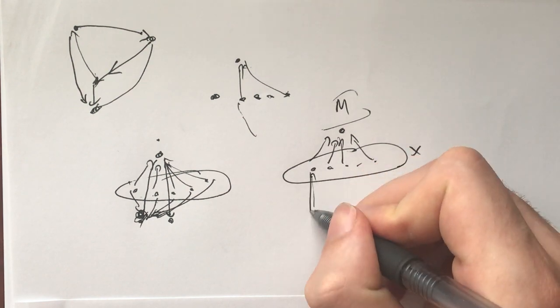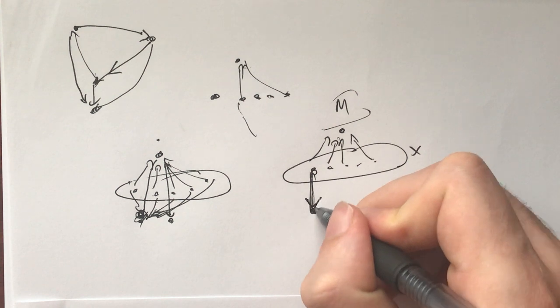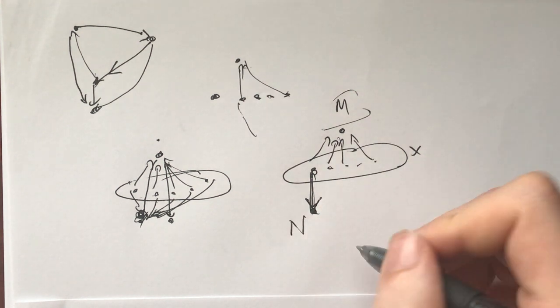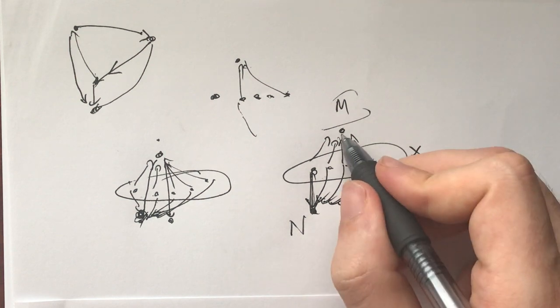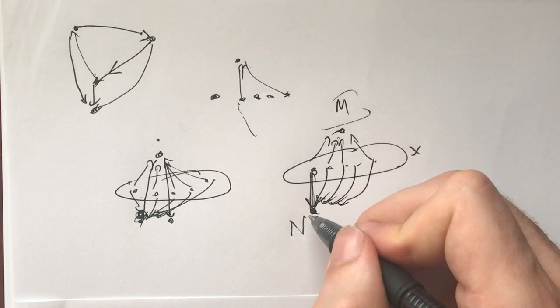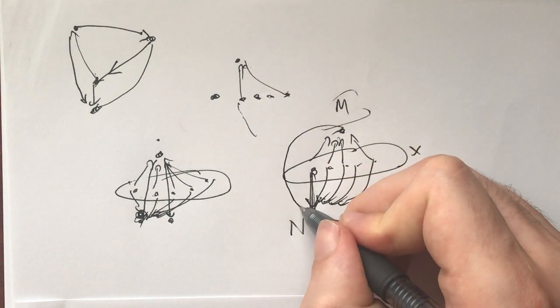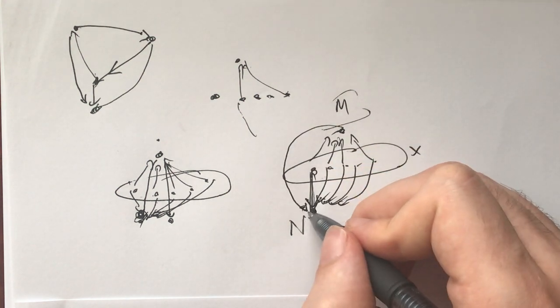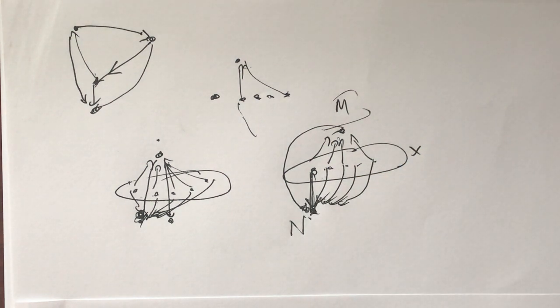Then that means that every city from X goes to this other city called N. So every one of them go to N. But because M and N are connected, but N doesn't go to M, that means M goes to N. So now N has more cities that go directly to it than M does.